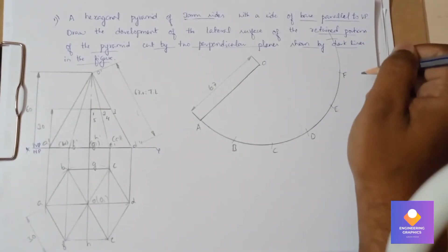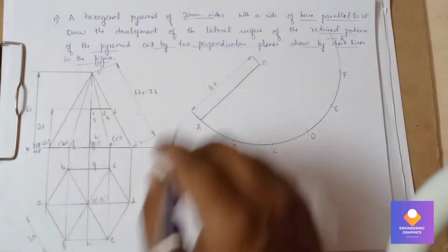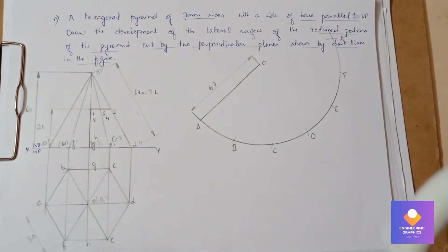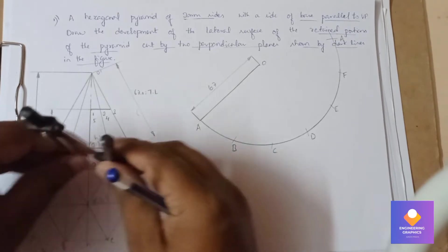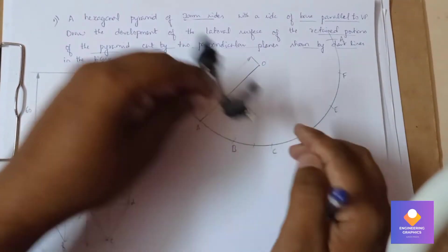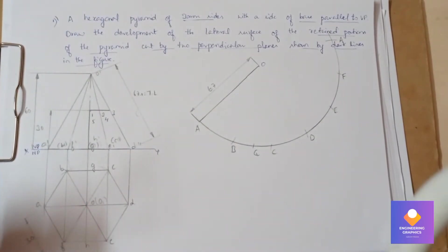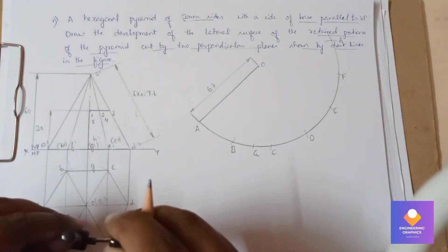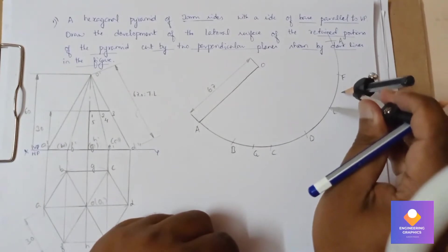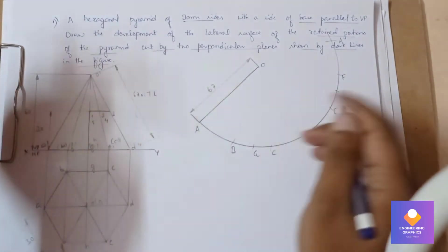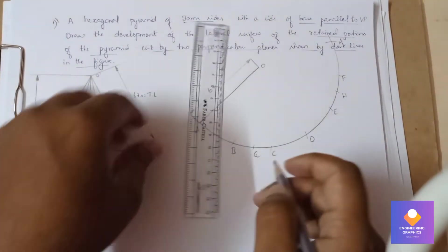You can mention A, B, C, D, E, F, and A. In between we have the G and H points. You can measure from B to G length and cut the arc. That is G, and from F to H, or E to H. You can cut the arc there, that is E to H.